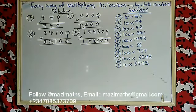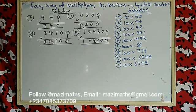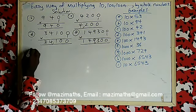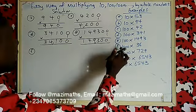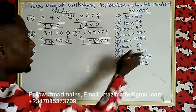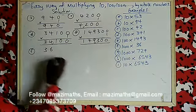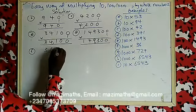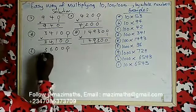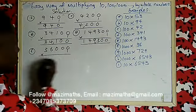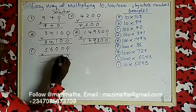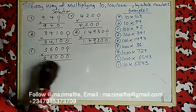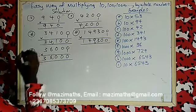Example F: 1000 times 36. Write 36 first. How many zeros are in 1000? Three zeros — put one, two, three zeros. Then multiply by one: one times zero is zero, one times zero is zero, one times zero is zero, one times six is six, one times three is three. Your answer is 36000.